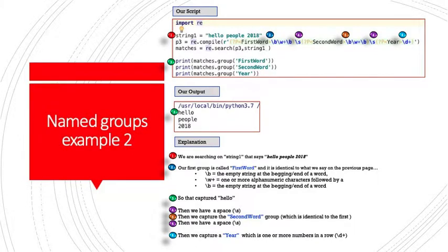Let's expand upon this named group concept a little bit more. We'll get a little bit more complex here, but this should drive home what we just saw in no uncertain terms. Number one, we're searching on a string that says hello people 2018. Number two, our first group is called first word and is identical to what we saw on the previous page. slash B equals the empty string at the beginning or end of the word slash W plus equals one or more alphanumeric characters, followed by a slash B, which again equals the empty string at the beginning or the end of the word. So that will bring us back the word hello in our string, that very first piece. First word brings us back hello. Number four, we have the backslash S, not in a group. It just hangs out there by itself. Number five, we capture our second word, which is identical to the first word. So number five is going to bring us back people.